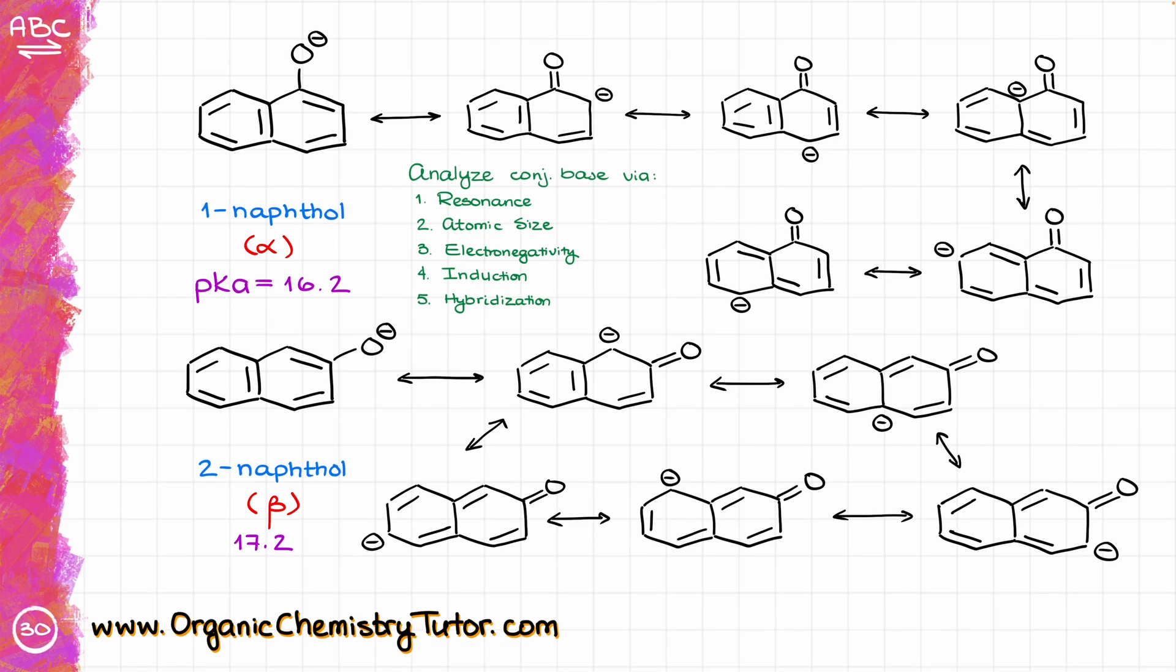You see, from the perspective of the resonance, we are going to have the same number of structures, and all of those structures that we just drew here are minor contributors. The charges are also going to be located on either oxygen for the major contributor, which is the original structure, or the carbons, which is the rest of our structures. For the same reason, there is no difference between the electronegativity, or induction, or hybridization in this case. And yet, we are still seeing different pKa values. What the heck?